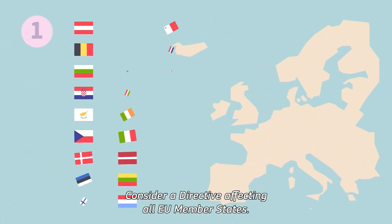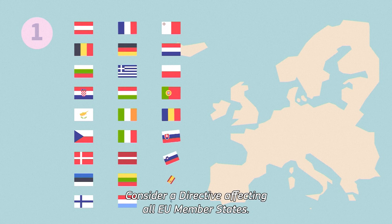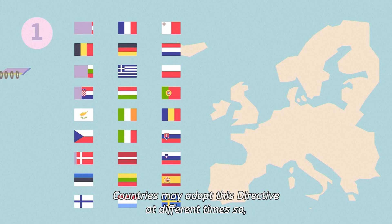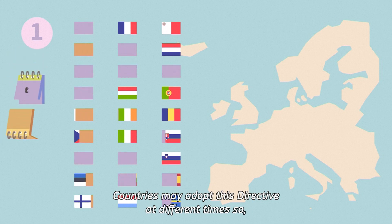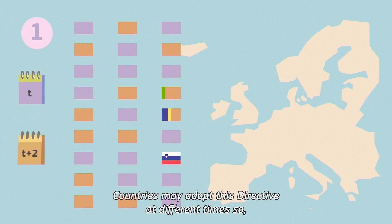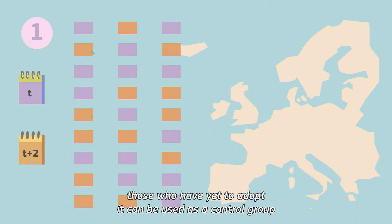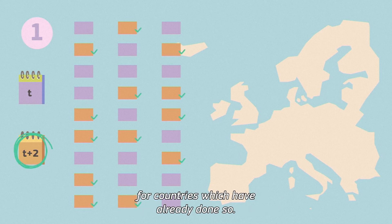Consider a directive affecting all EU member states. Countries may adopt this directive at different times, so those who have yet to adopt it can be used as a control group for countries which have already done so.